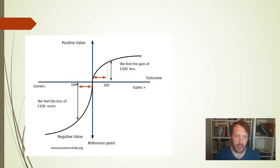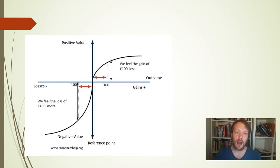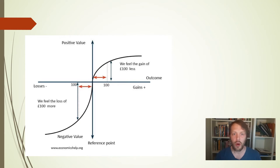Back to the graph: if this were describing strictly logical behavior it should be a straight line between minus a hundred and plus a hundred. But clearly that's not how human beings work.